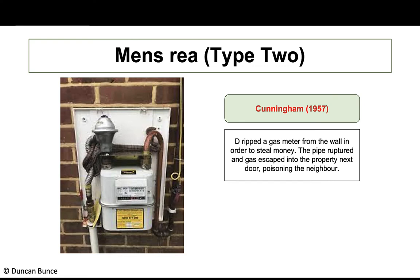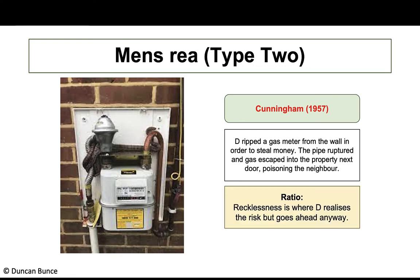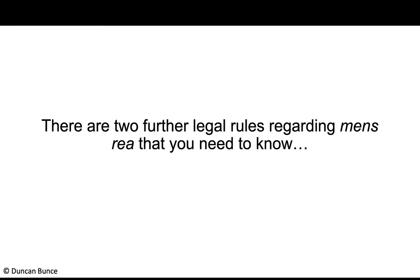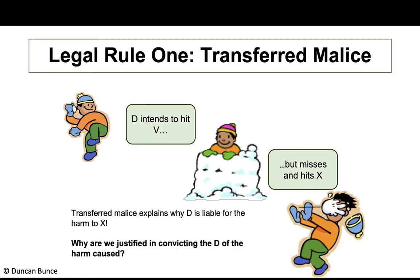Formerly, recklessness was objective; now it is subjective. Are the courts satisfied the defendant realised the risk? The key case is Cunningham: the defendant ripped a gas meter from the wall to steal money, the pipe ruptured, and gas escaped into the neighbouring property, poisoning the neighbour. The ratio from this case is: recklessness is where the defendant realises the risk but goes ahead anyway. Cite Cunningham when discussing recklessness as mens rea.